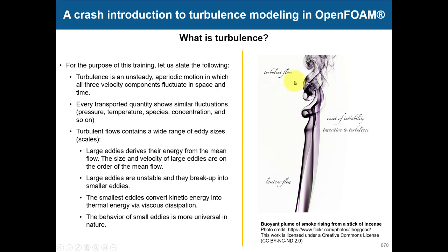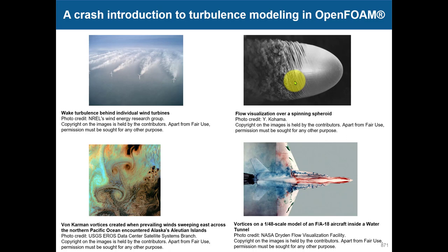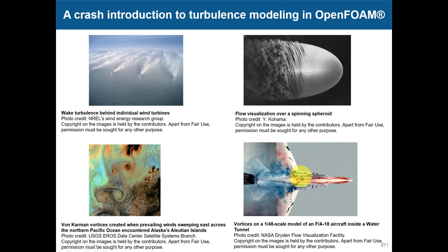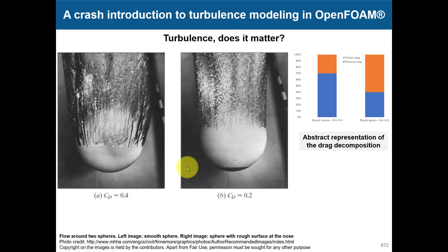Here we have a few images of turbulent flow - from small scales to very large scales, including atmospheric scales and airplanes. All around you have turbulence. The common feature is this aperiodic, chaotic motion that enhances mixing. You can see here: laminar flow, then onset of turbulence, then the full mixing region.